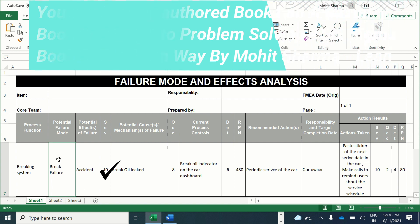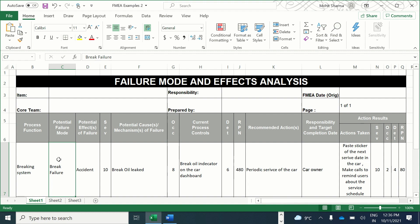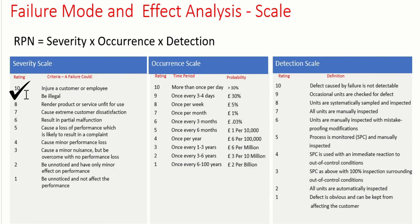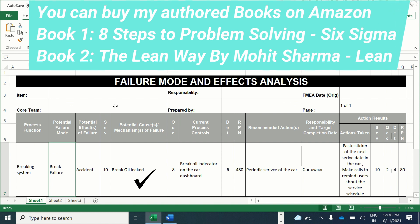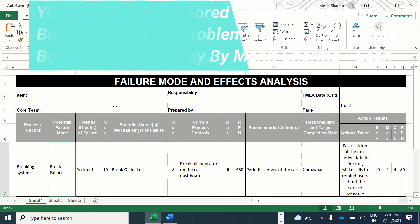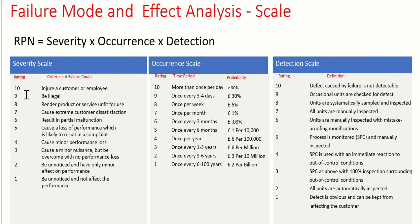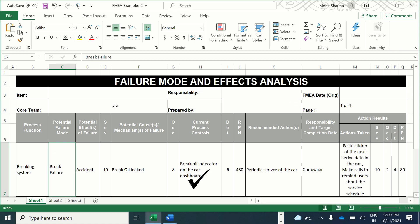The severity of this is 10 — referring to the rating scale where injury to a customer or an employee carries a severity score of 10. The potential cause of the failure is brake oil that has leaked. The occurrence score is 8, meaning the failure is happening approximately once per week for the cars being manufactured. The current process control is a brake oil indicator on the car dashboard.